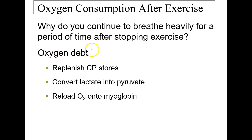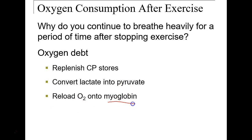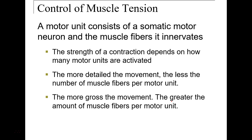Insufficient release of acetylcholine at the neuromuscular junction means that if we are not communicating properly with the muscle, it will fatigue. Regarding oxygen consumption after exercise — oxygen debt — we breathe heavily because we need to replenish creatine phosphate storage, convert lactic acid into pyruvate for later use, and reload oxygen onto myoglobin. That last one is the main reason we breathe so heavily.